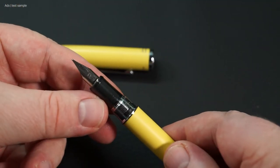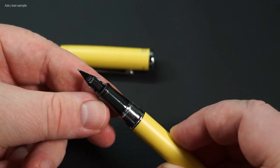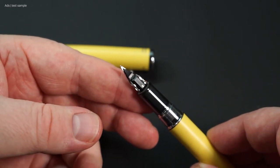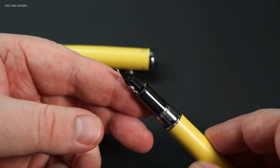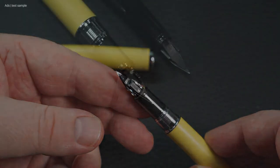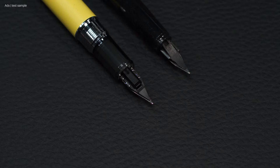But the special thing about this fountain pen is on the back of the nib, the feed. Because here you can see a small channel that protrudes far into the nib area. Here, once in the close-up with the usual fountain pen in comparison.